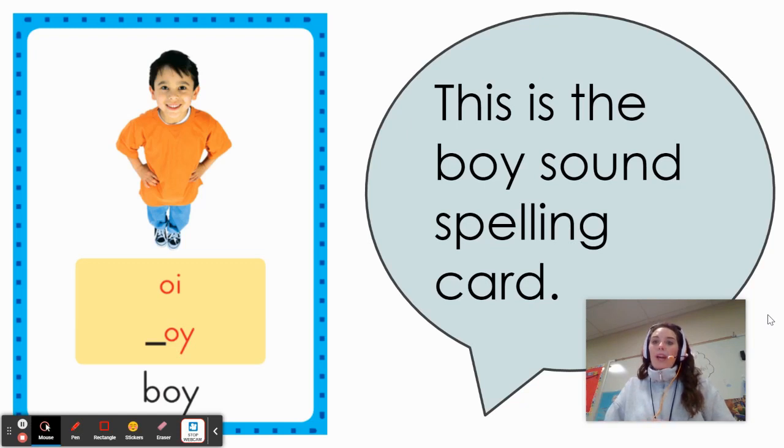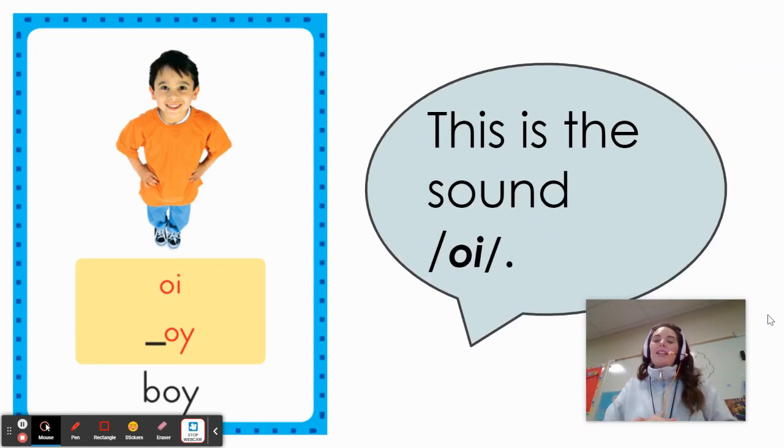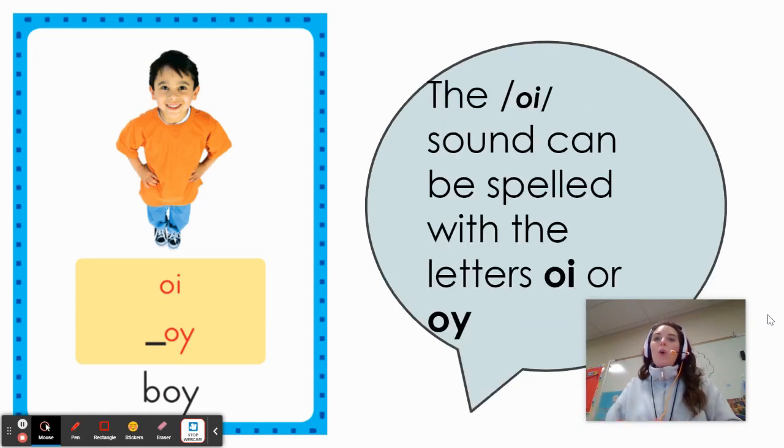This is the boy sound spelling card. Watch me as I say the word boy. B-oy, o-y. This is the sound o-y. The o-y sound can be spelled with the letters o-i or o-y. O-y. Can you say that sound out loud with me, second graders? Repeat after me. O-y. Good job.